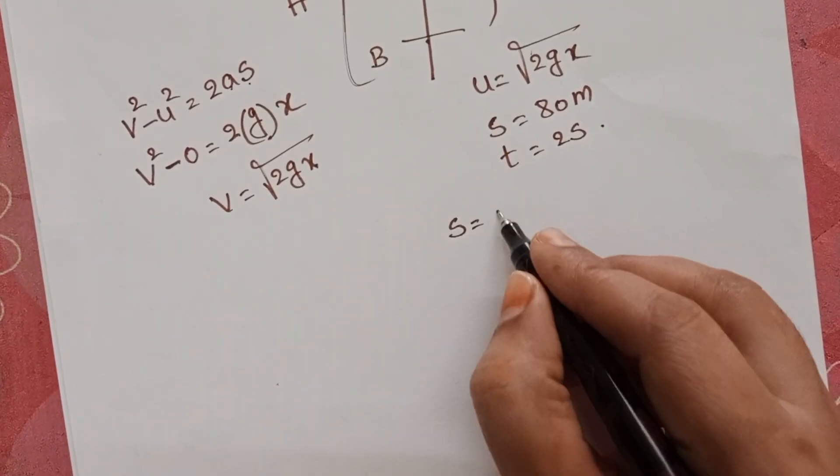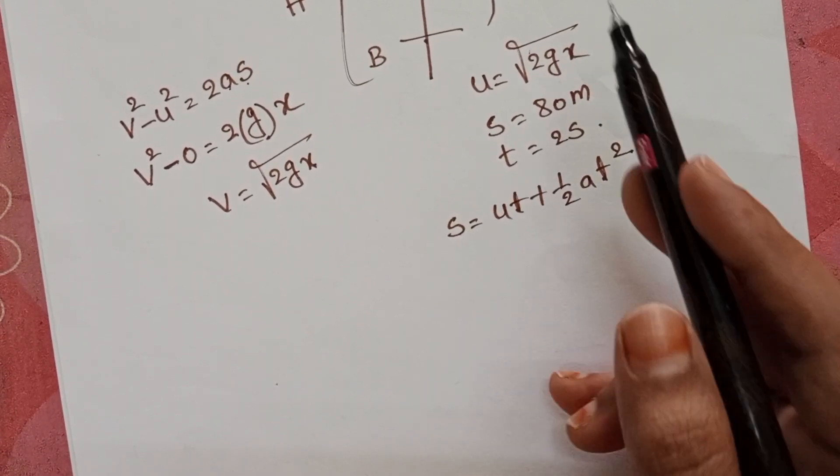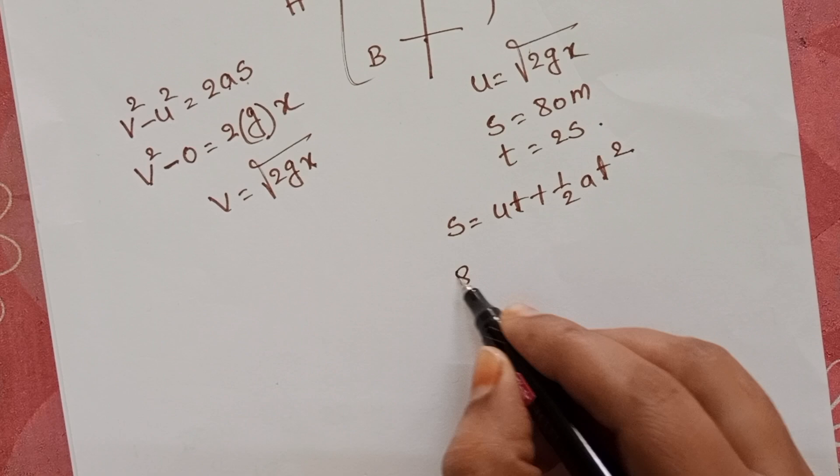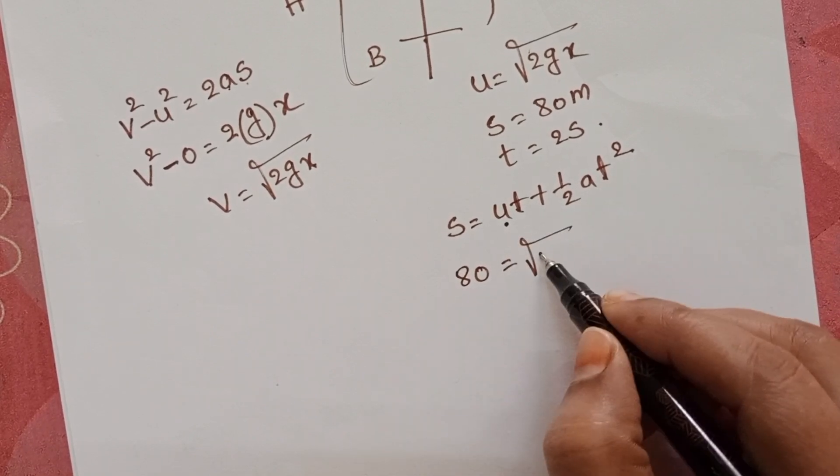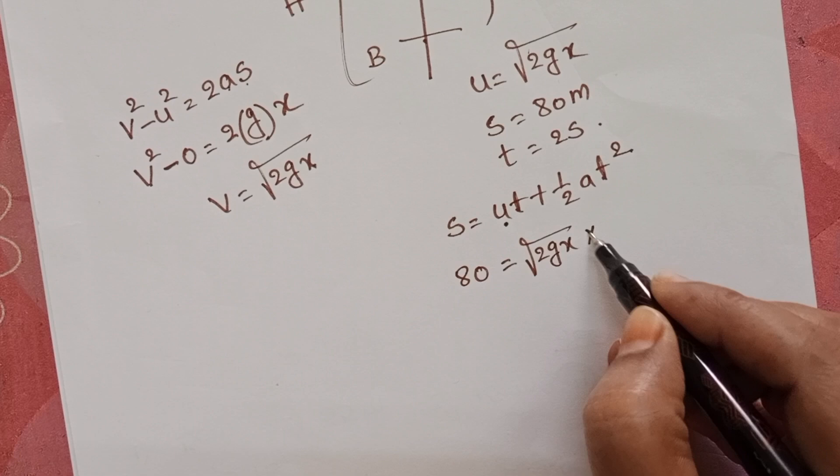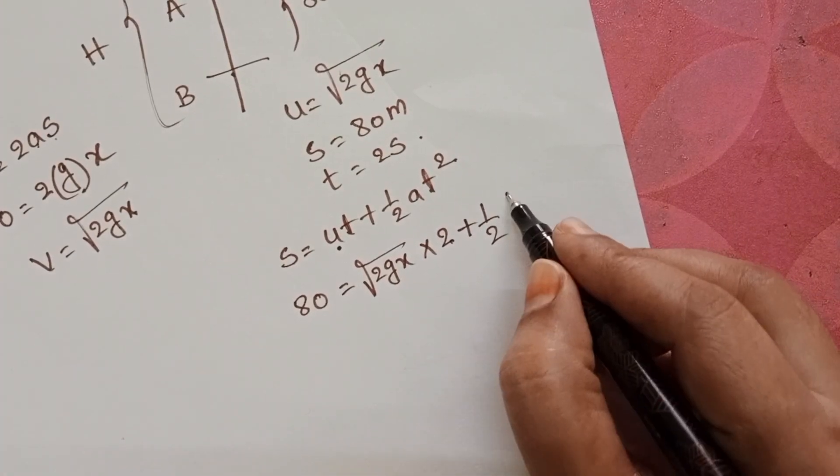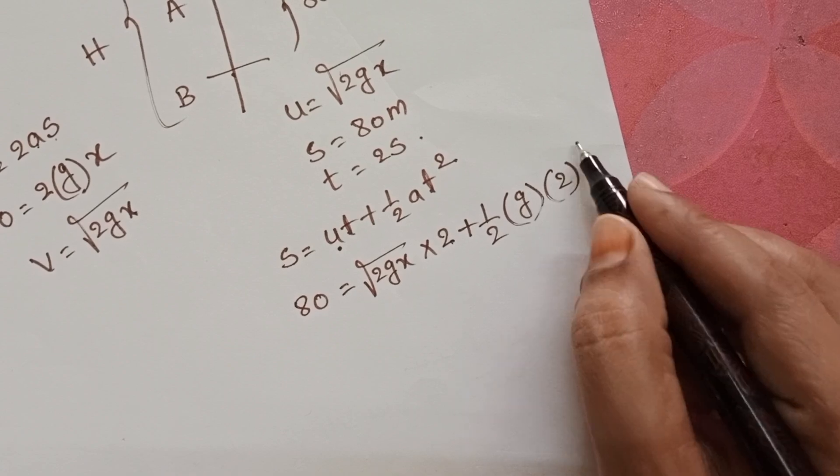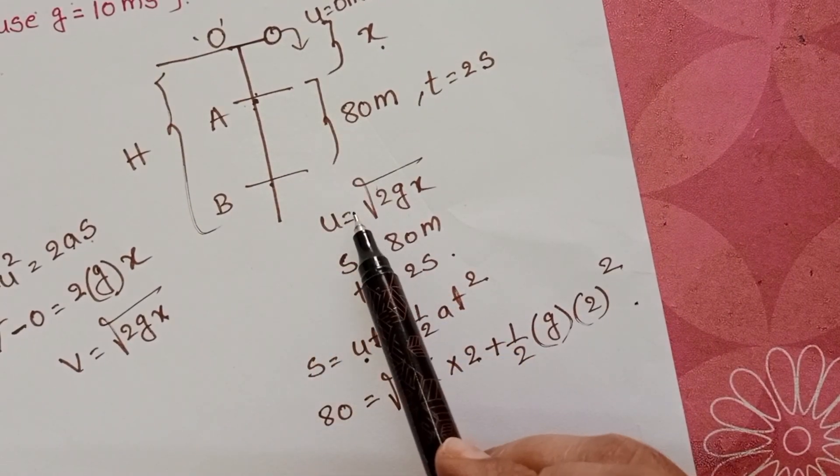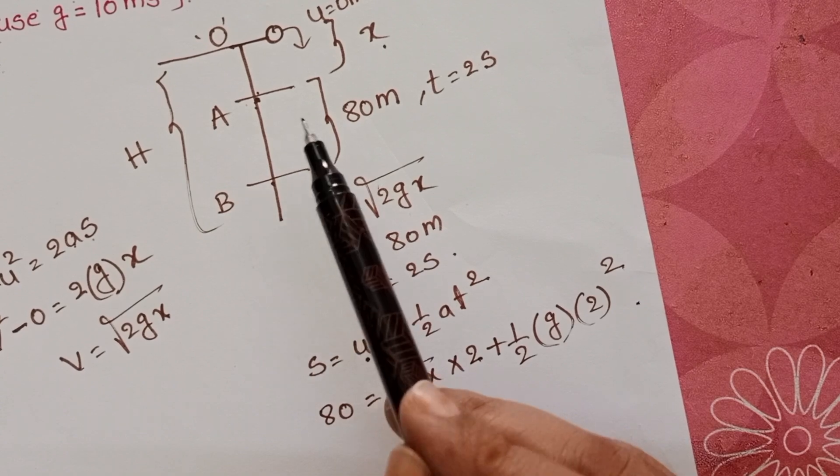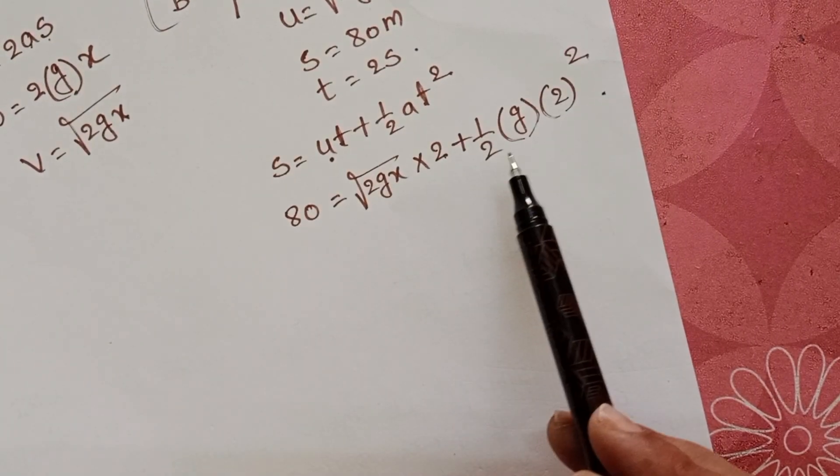Now take the equation S equals UT plus half AT squared. Distance between A to B is 80 meters. Initial velocity at point A is square root of 2GX, given time is 2 seconds. Half into G into 2 whole squared. Here this body is traveling in downward direction, so all the signs are negative but get cancelled on both sides. That's why take plus sign only.